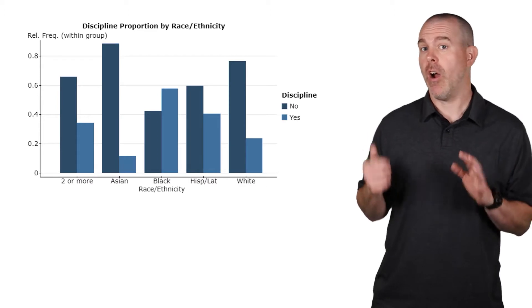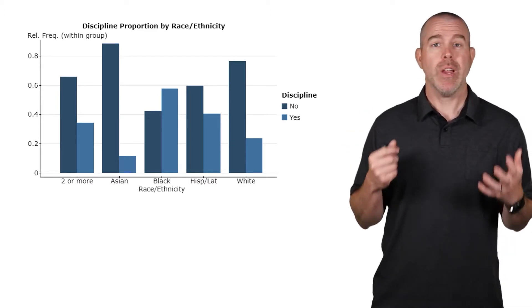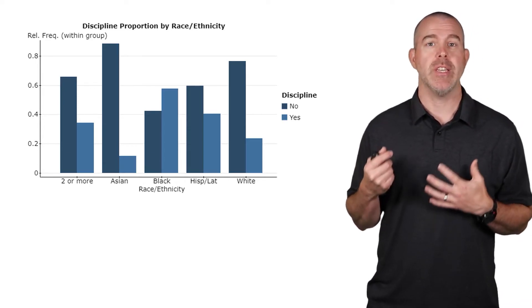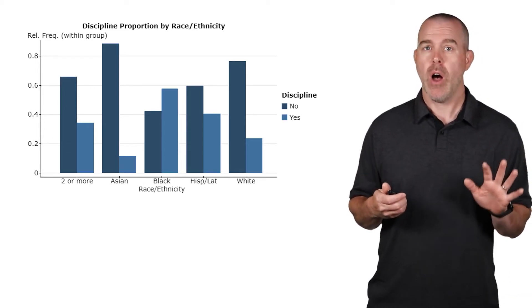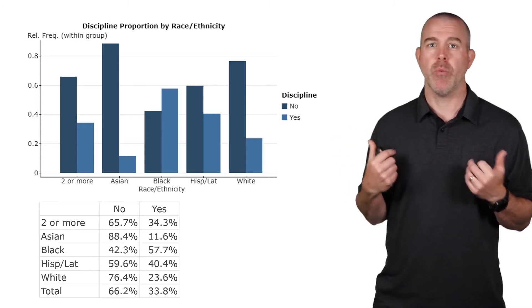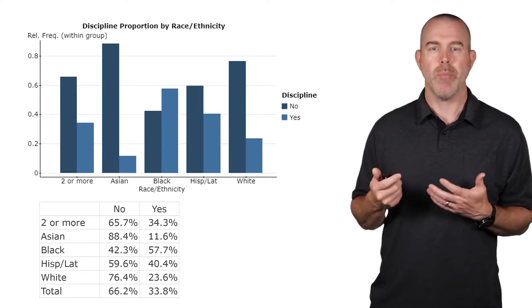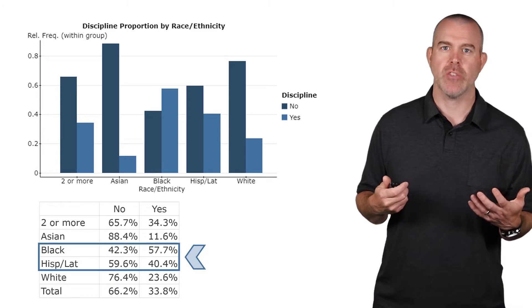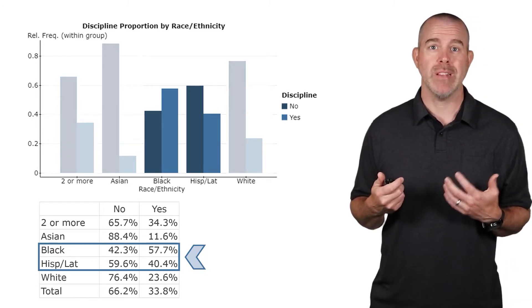In this video we're going to investigate our discipline data again and try to determine if there's a relationship between race or ethnicity of the student and whether or not they received a discipline referral. We've already talked about this data before. If you pull up the relative distribution here, about what proportion received a discipline, we can see that the Black and Hispanic Latinx students pop out at you. They have much higher discipline rates than the other groups.